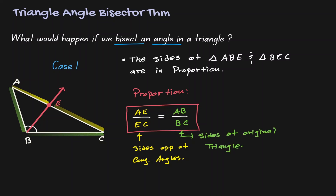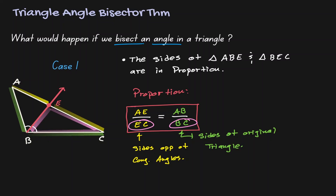Another thing to keep in mind is that the numerators of both fractions come from the same triangle — in this case, the left triangle. And the denominators AE and BC come from the same triangle, the triangle on the right. This is an illustration of the triangle angle bisector theorem.